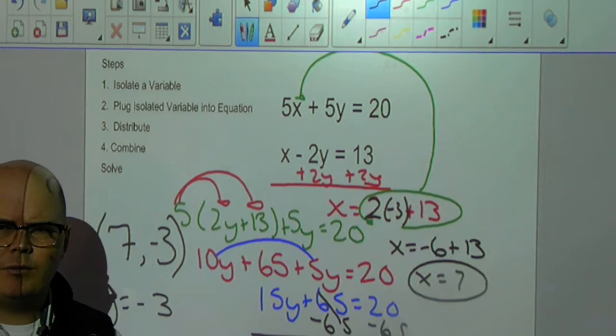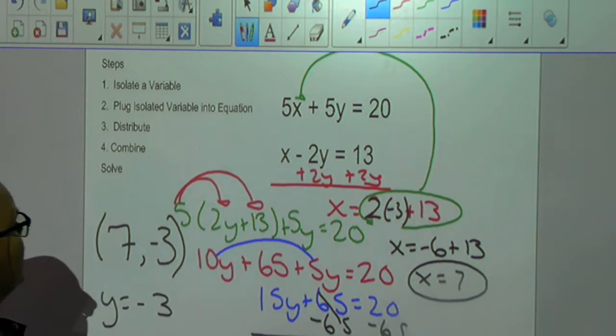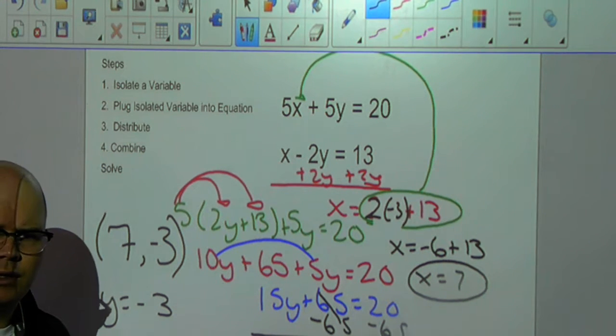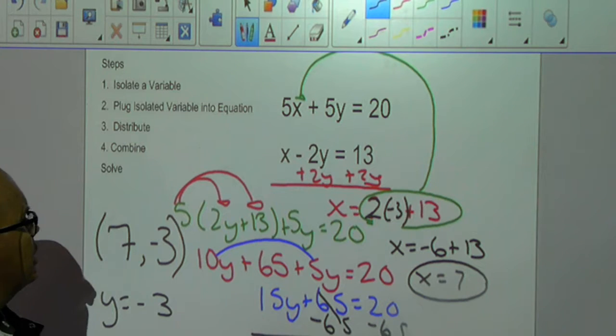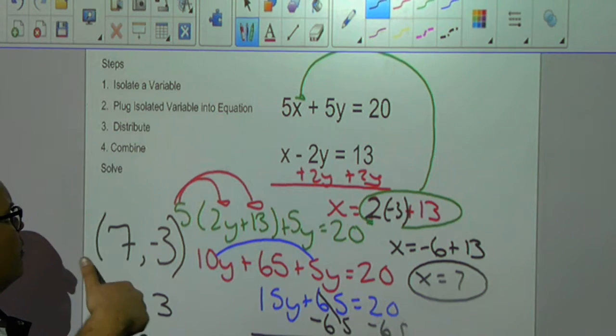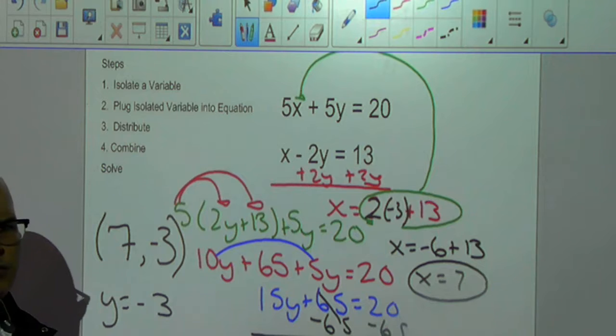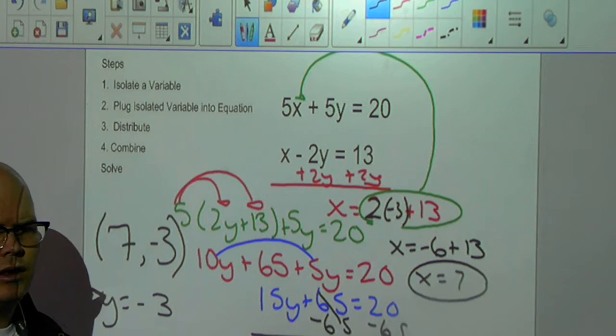Again, whenever you have solving by substitution, you always need to get an isolated variable. That's why it always works best when you have one in slope intercept form. But if they're in standard form, you can isolate a variable. Take that equation, plug it back into your equation, distribute, combine, and then solve.